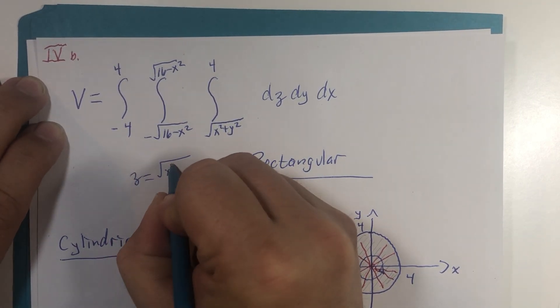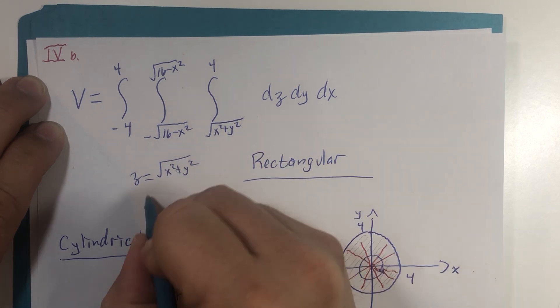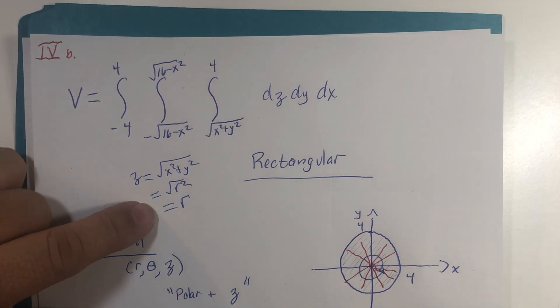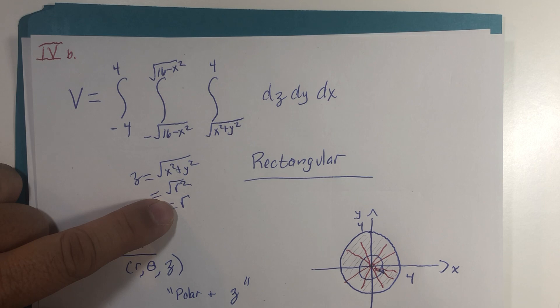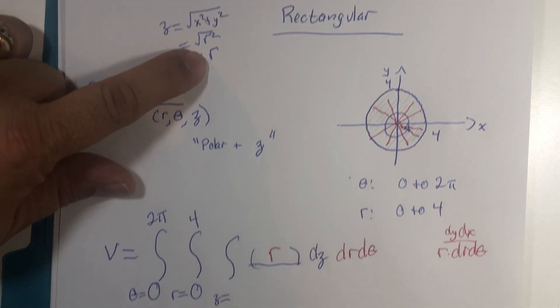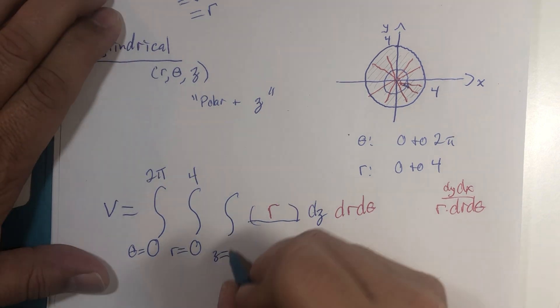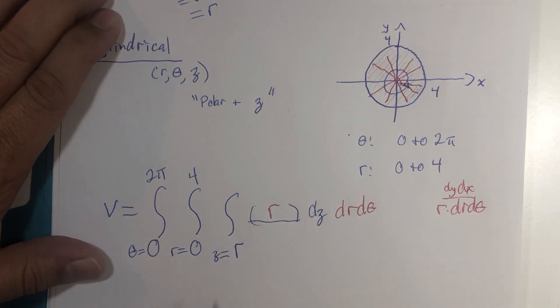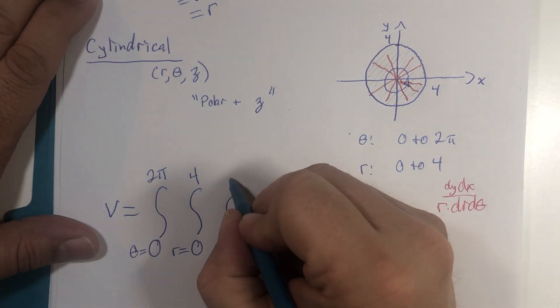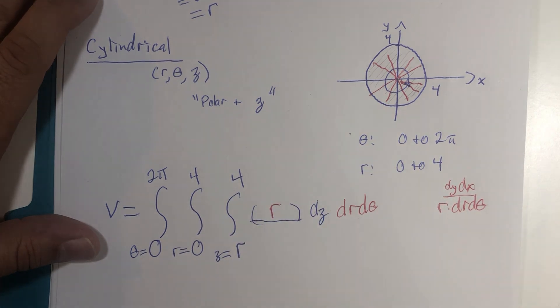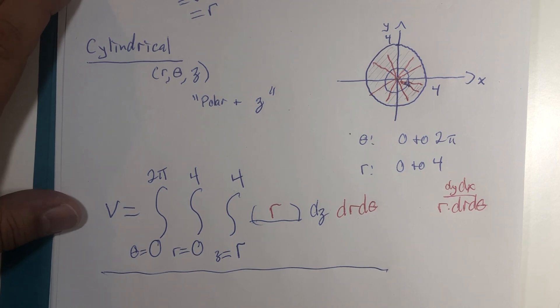z equals square root of x squared plus y squared, which is the square root of r squared. Now, here's me ignoring my own wisdom about what to do with r. I have to make sure r is positive. But in our boundaries, r is never negative. It goes from 0 to 4, so I can write r here. And the upper limit of integration here is 4 because that's what z equaled before. There it is. Cylindrical coordinates triple integration.